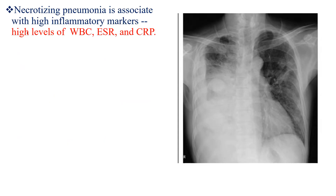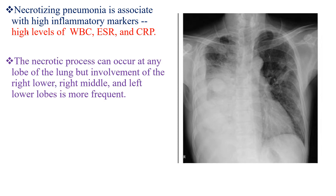Necrotizing pneumonia is associated with high inflammatory markers, high levels of WBC, high levels of ESR, and C-reactive protein. The necrotic process can occur at any lobe of the lung, but involvement of the right lower, right middle, and left lower lobes is more frequent, especially the right lower and right middle lobe.